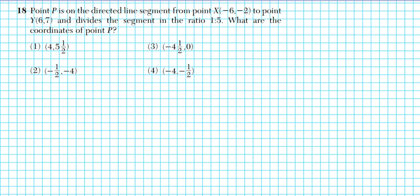Let's take a look at question number eighteen. It reads: point P is on a directed line segment from point X at negative six, negative two to point Y at six, seven, and divides the segment in the ratio one to five. What are the coordinates of point P?